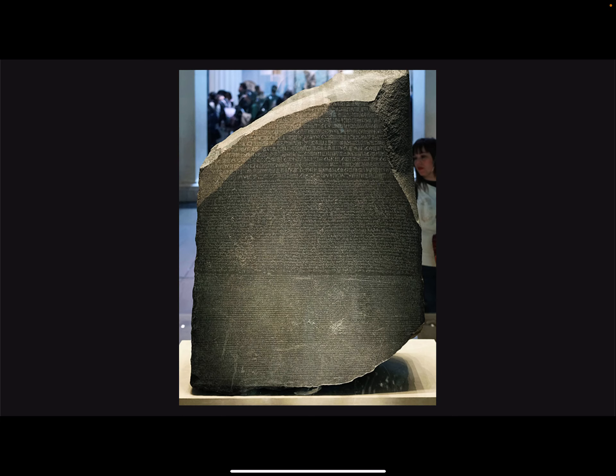The ability to read and write ancient Egyptian hieroglyphics was lost in time, and they were indecipherable to us until the discovery of the Rosetta Stone in 1799. It contains the same text in three languages: Ancient Greek, Demotic, and Hieroglyphics. It was literally a key to translating these ancient symbols.